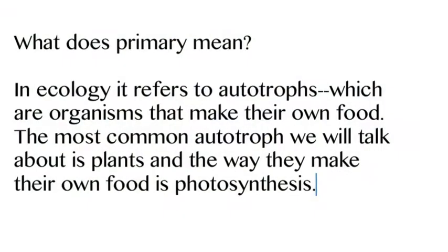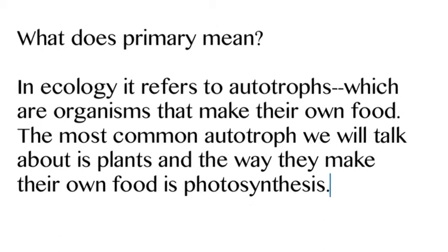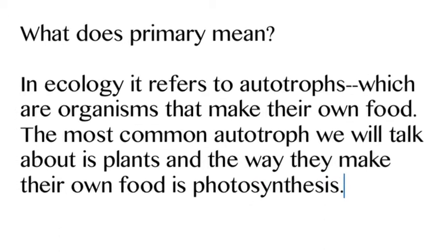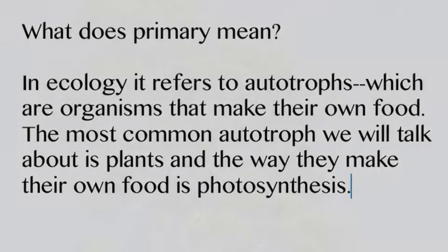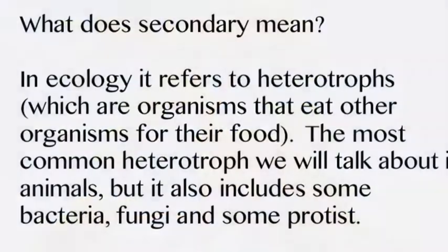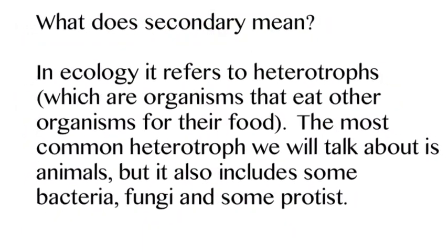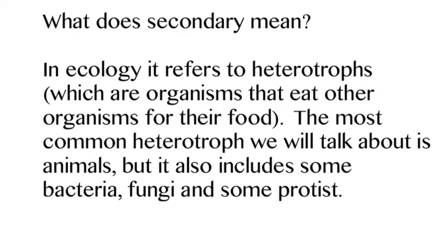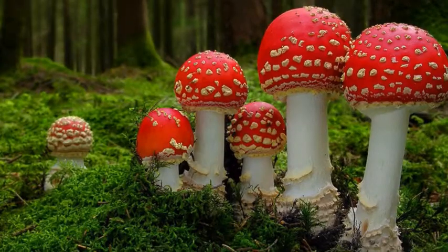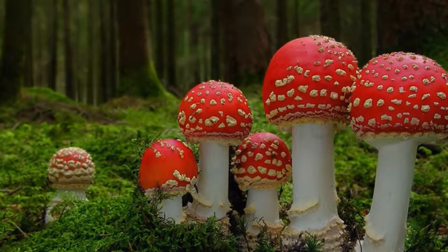When we look at plants, we're going to think about the terms primary and secondary. In ecology, primary refers to autotrophs, which are organisms that make their own food — the most common being plants. Secondary refers to heterotrophs, which are organisms that eat other organisms for food. The most common are animals, but that also includes fungi, some bacteria, and some protists.